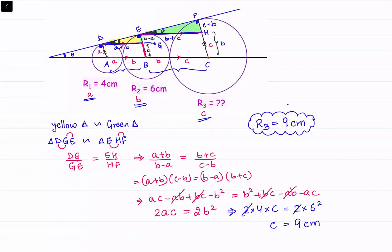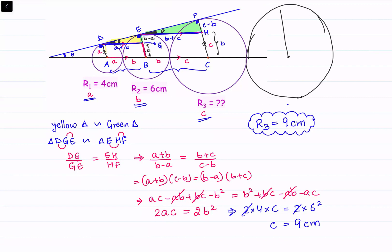In fact, if instead of 3 circles we have 4 or 5 circles — each touching the next, with all centers on the black line and all tangent to the blue line — then all the radii are in geometric progression (GP). The ratio of consecutive radii is constant: a/b = b/c = c/d and so on. I hope you enjoyed the question and solution. See you in the next video!